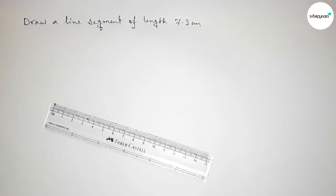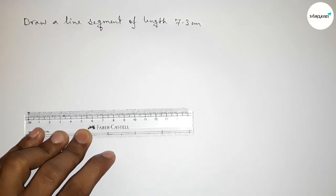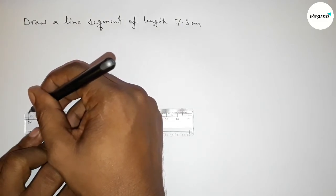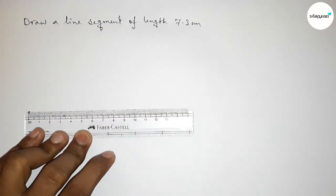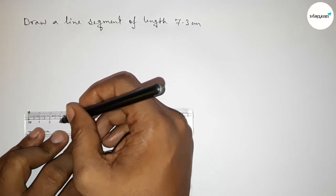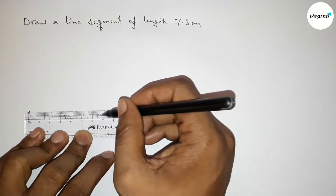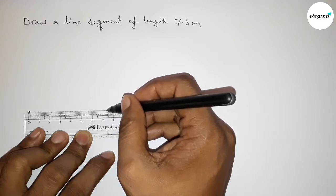First we have to put here the scale perfectly, then measuring the length 7.3 centimeter. So this is first starting zero, so first marking here zero, then counting the length. So this is zero, one centimeter, two centimeter, three centimeter, four centimeter, five, six, seven. So this is seven, seven point one, two, and this is three. So this is seven point three centimeter.